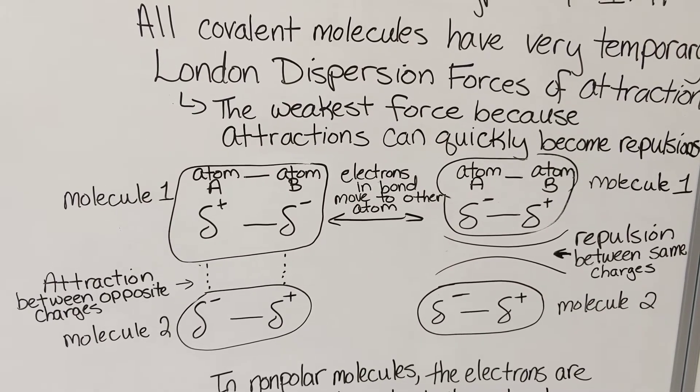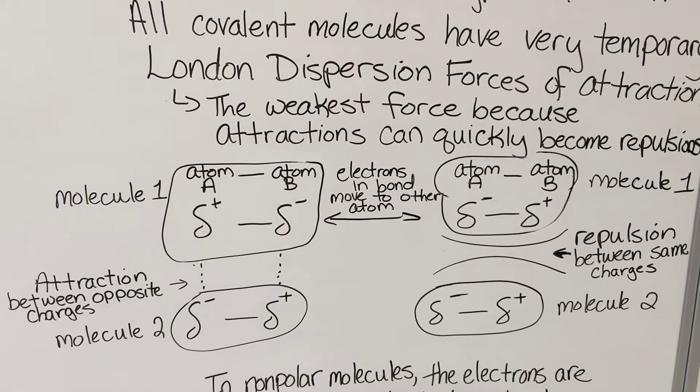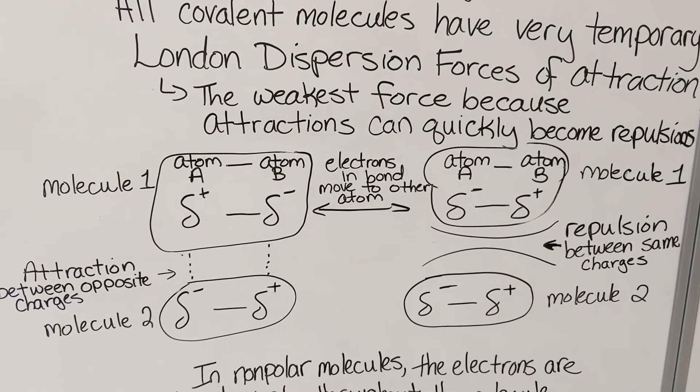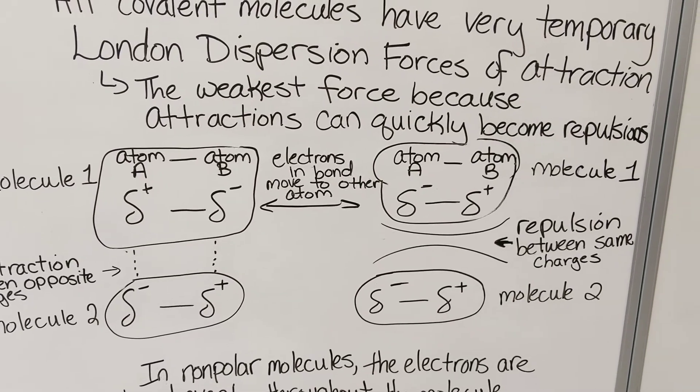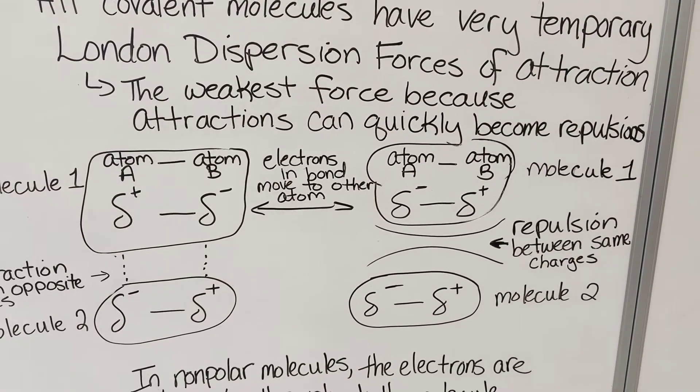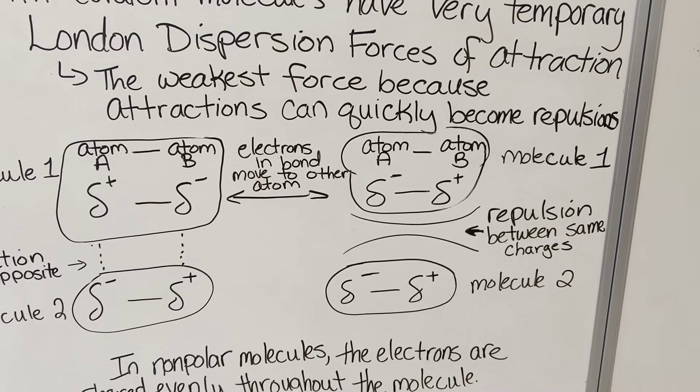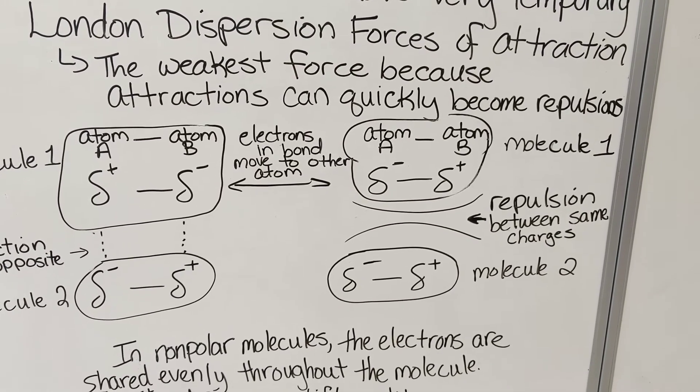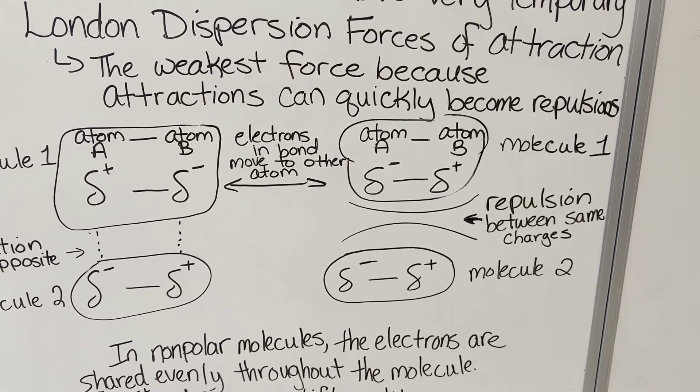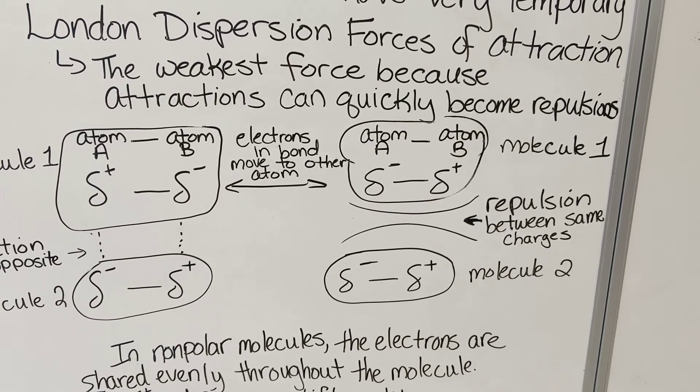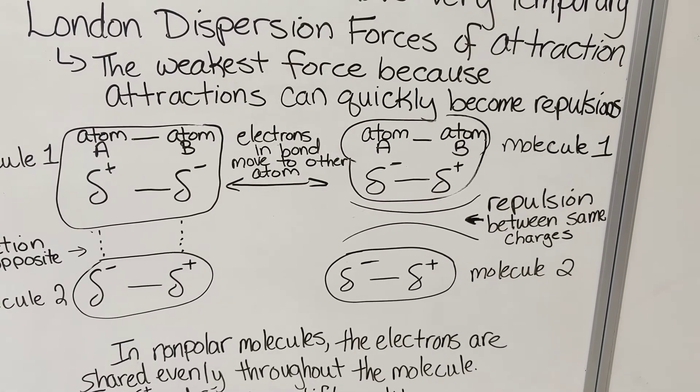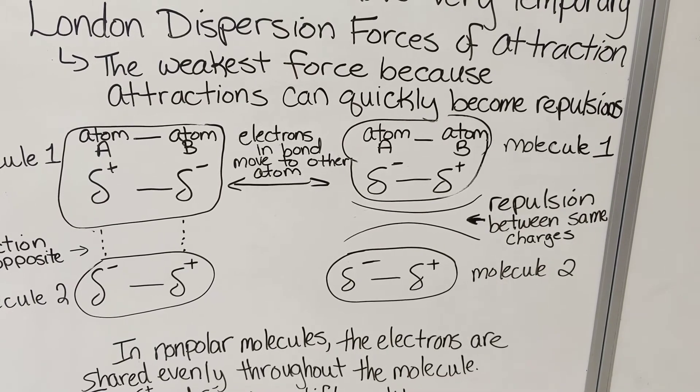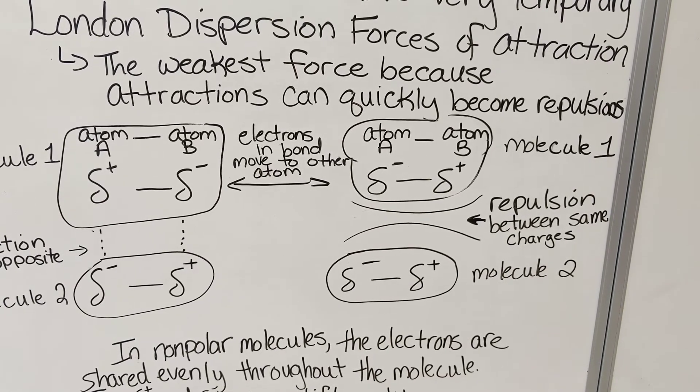The electrons in the bond in that top molecule then shift. They move over to the nucleus of the other atom. And so now the atom A, or left side of the top molecule, is partially negative, and atom B, or the right side of the top molecule, is partially positive. This creates repulsion, or repulsive forces, between molecule 1 and molecule 2.